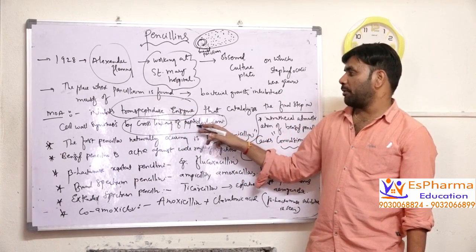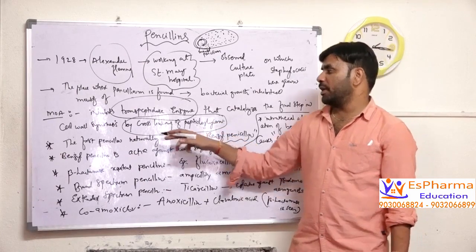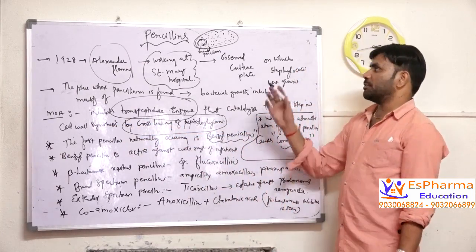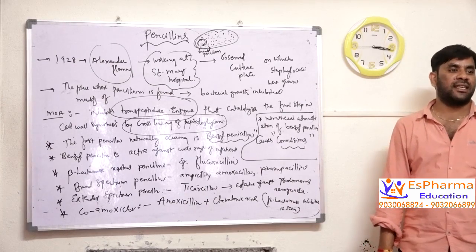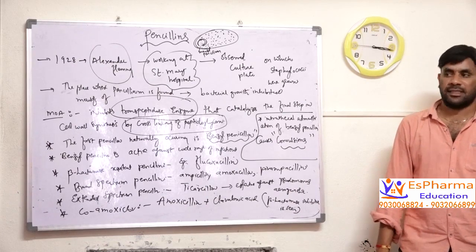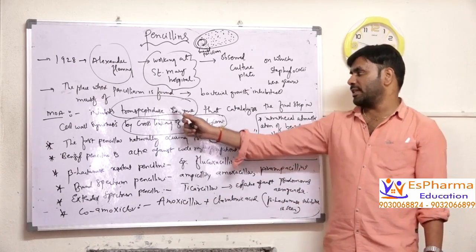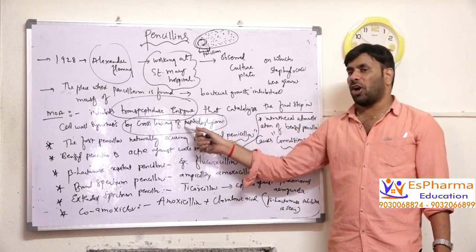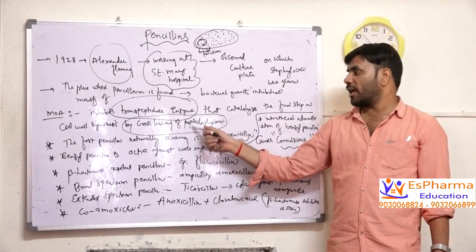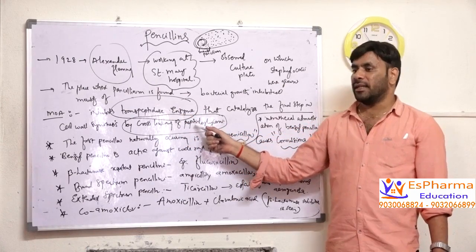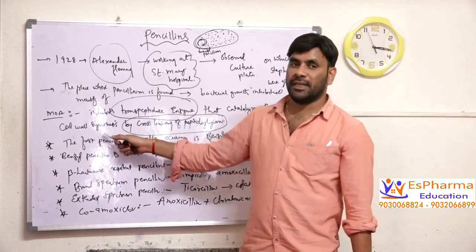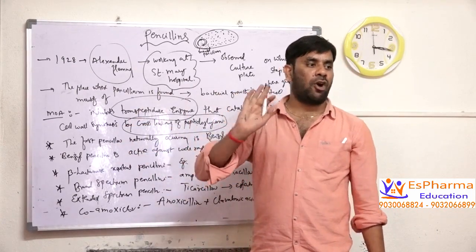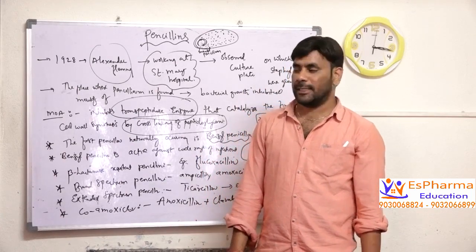This cross-linking of peptidoglycan is a very important step in cell wall synthesis. Simply, penicillin acts by inhibiting cell wall synthesis. By inhibiting the transpeptidase enzyme, the cross-linking of peptidoglycan is inhibited, thereby cell wall synthesis is inhibited.